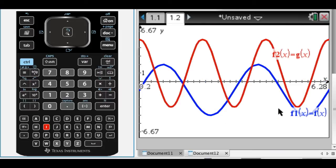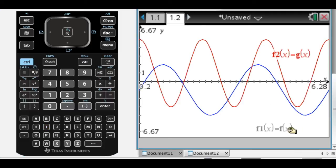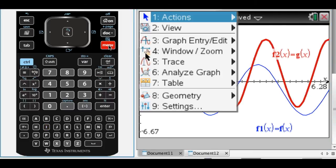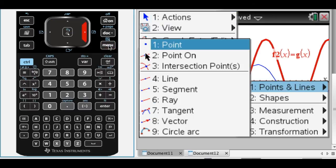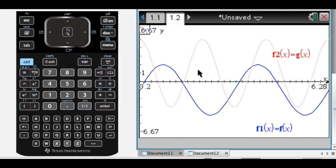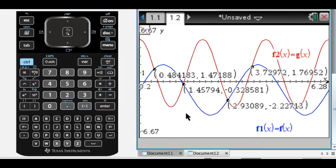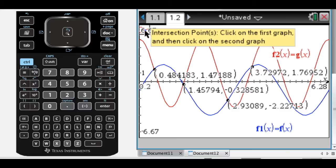Okay, so I have this interval, and what I want to do is I want to find the intersection points, so I'm going to do that by using something from the geometry tools, actually. So it's menu, geometry, and then points and lines, and then intersection points, and click on the first graph you want, click on the second graph, you get a ton of answers, and then what you want to do is make sure that you escape from here.